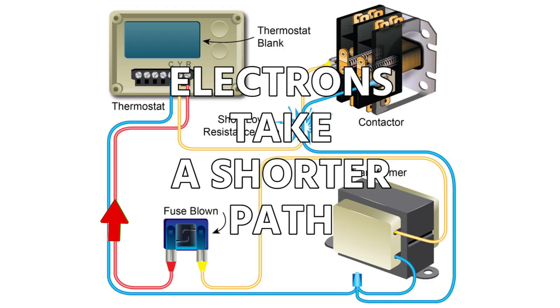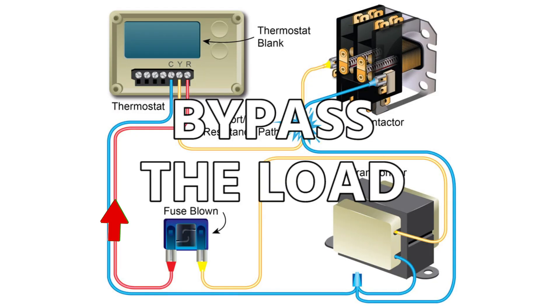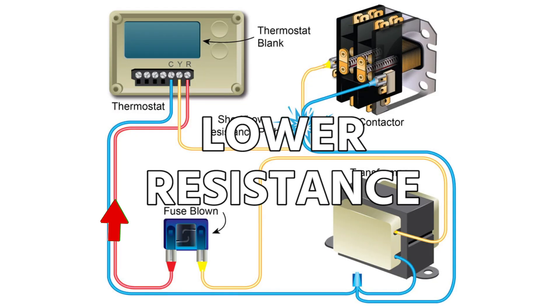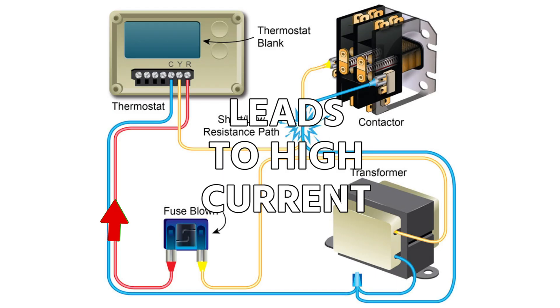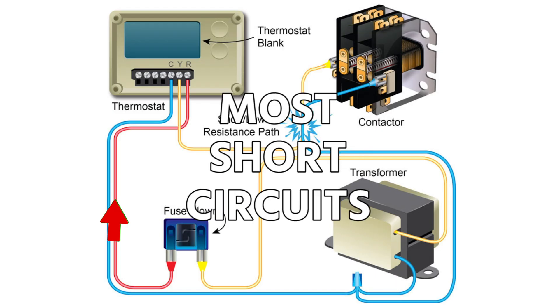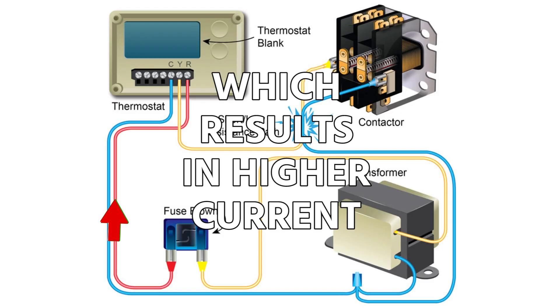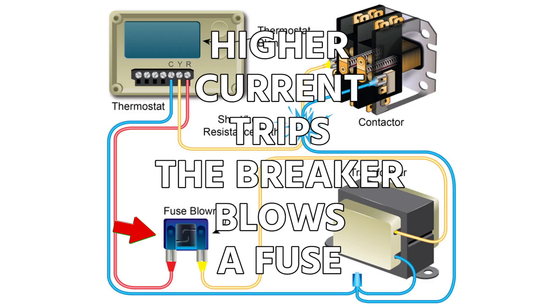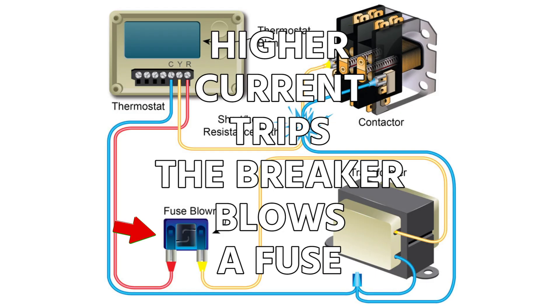It's a specific fault. A short specifically is when you have a case where electrons are able to take a shorter path — they're able to bypass the load — therefore resulting in lower resistance in most cases in the circuit, which often leads to high current. Most short circuits result in lower resistance, which results in higher current. And that higher current is what trips a breaker or blows a fuse.